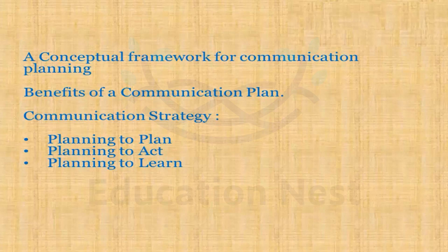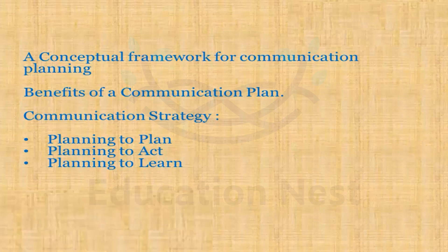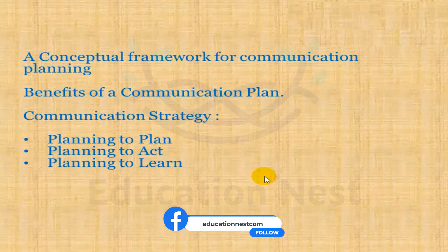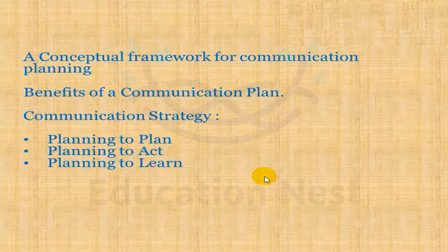We'll move on to the next communication strategy, which is planning to learn. Planning to learn is the conscious effort to get and use information about the effectiveness of the adaptation of the planning system to the system and about the adaptation of the system to the environment in order to improve both planning and system adaptation. This is the third level of planning. Here, planners apply the elements of ASTAL to create effective evaluation strategies.